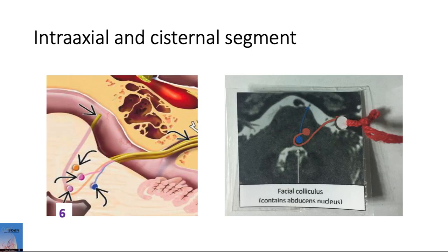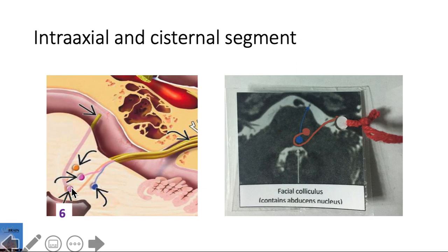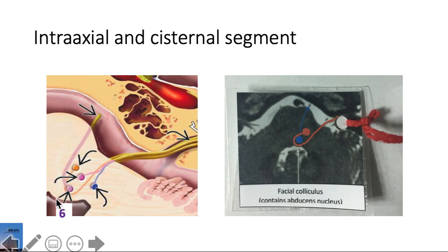Let's start with the intraaxial segment. This picture shows that there is more than one nucleus for the facial nerve, but let's just focus on the orange one here — this is the motor nucleus for the facial nerve. Notice that it sends out fibers to loop around another nucleus in violet, which is the abducens nucleus. Because of this configuration, there is a bulging at the floor of the fourth ventricle, forming the facial colliculus.